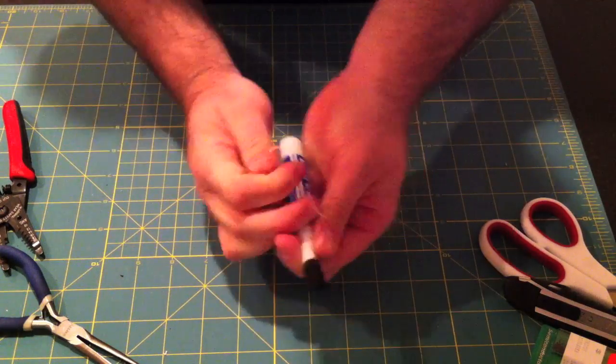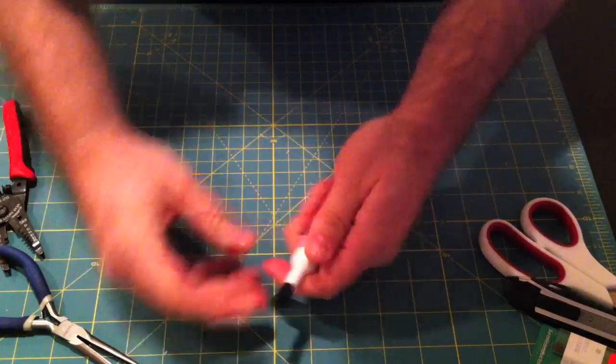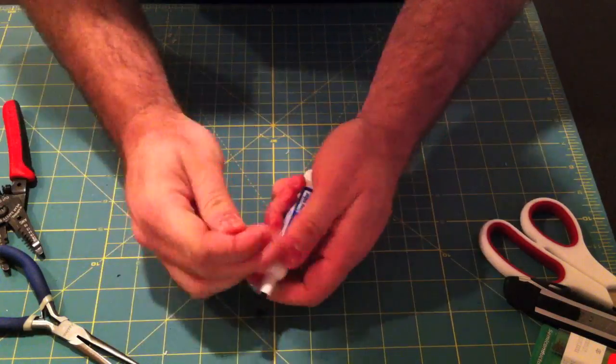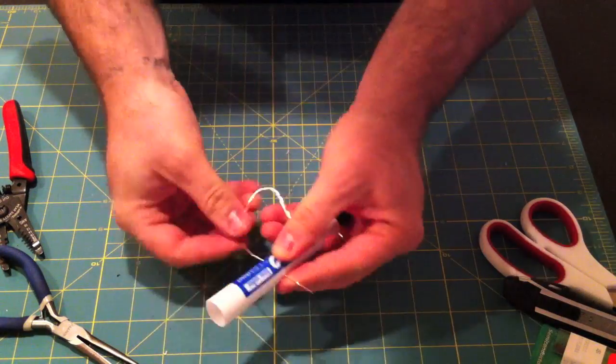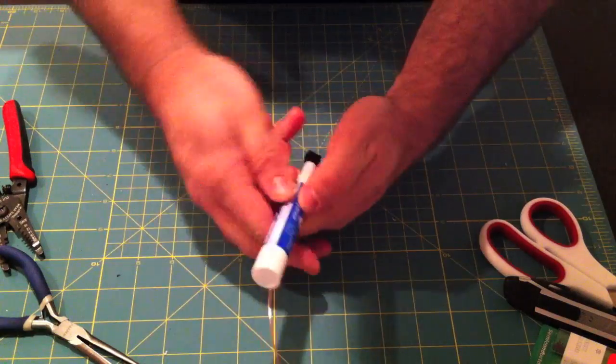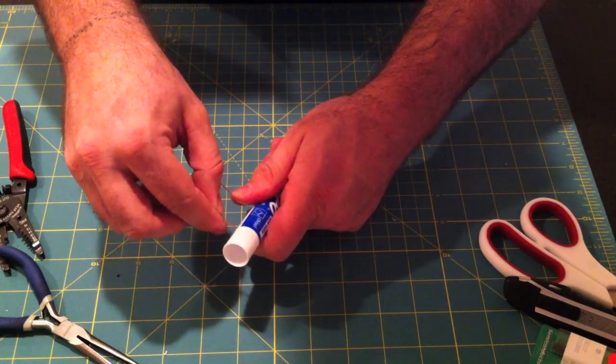Make sure the foam tip is all lined up to where you want it to be with the chisel before you pull it into the marker for the final time. Otherwise it will be a little bit harder to manipulate once it's in there.